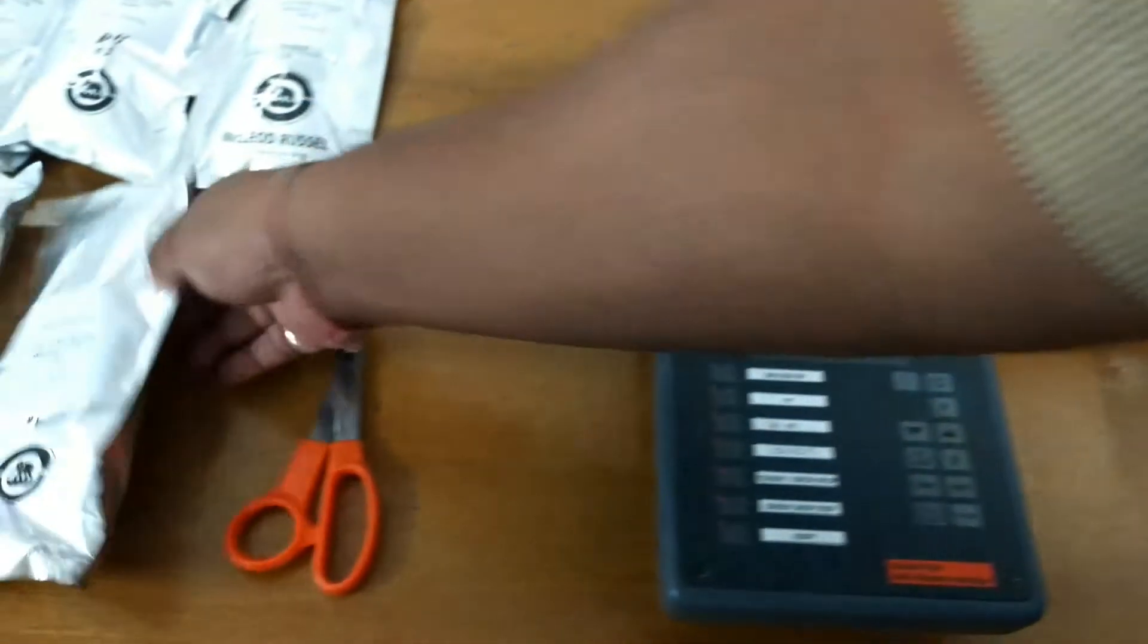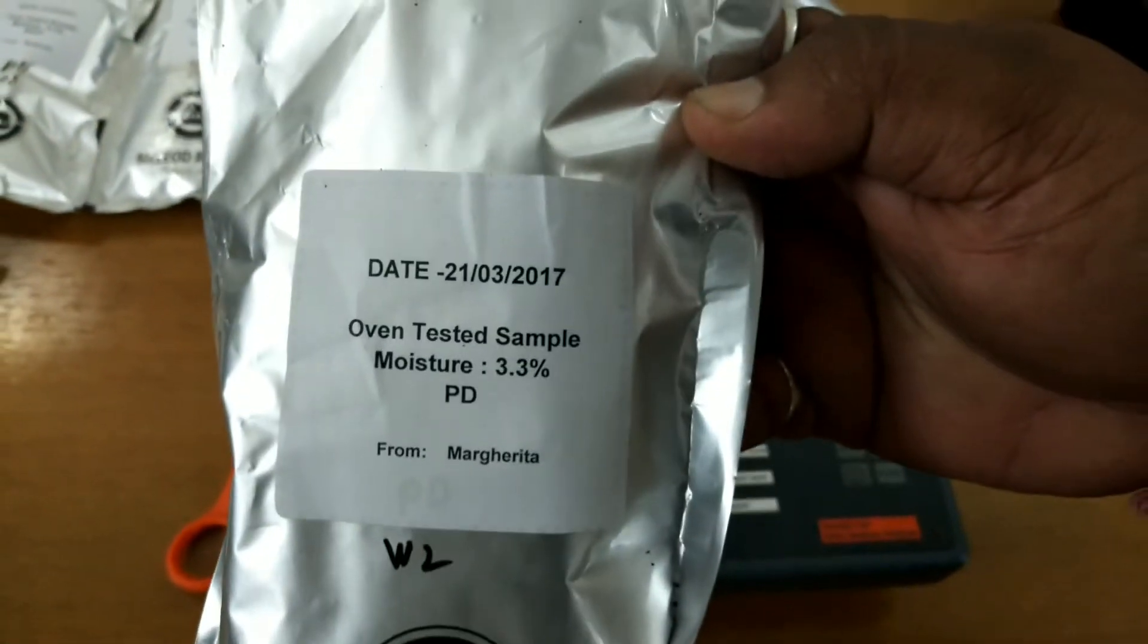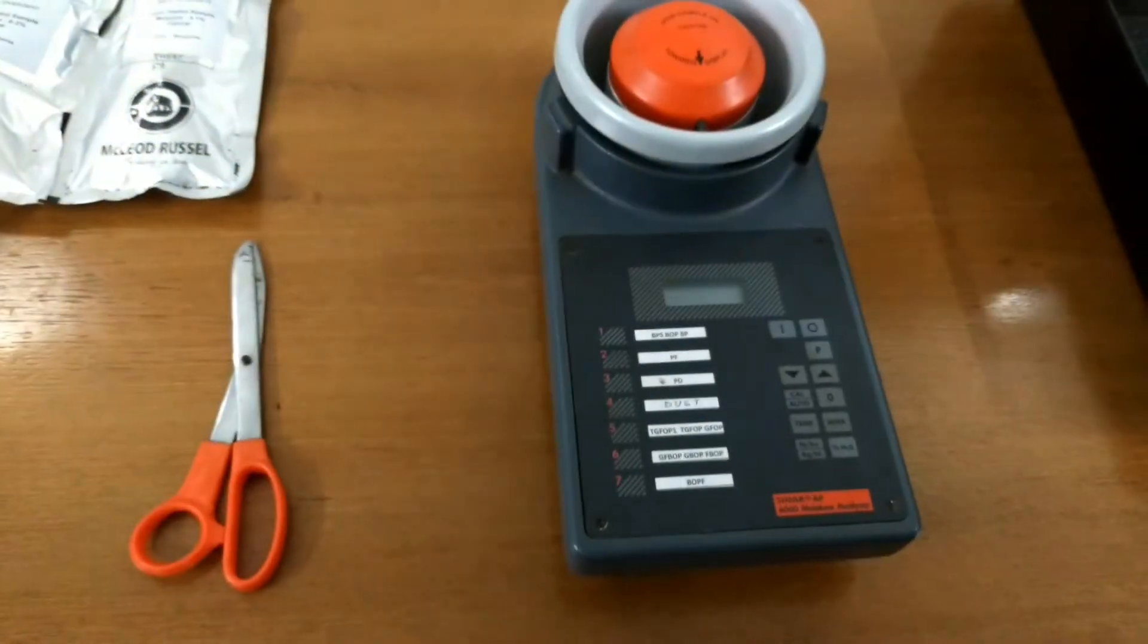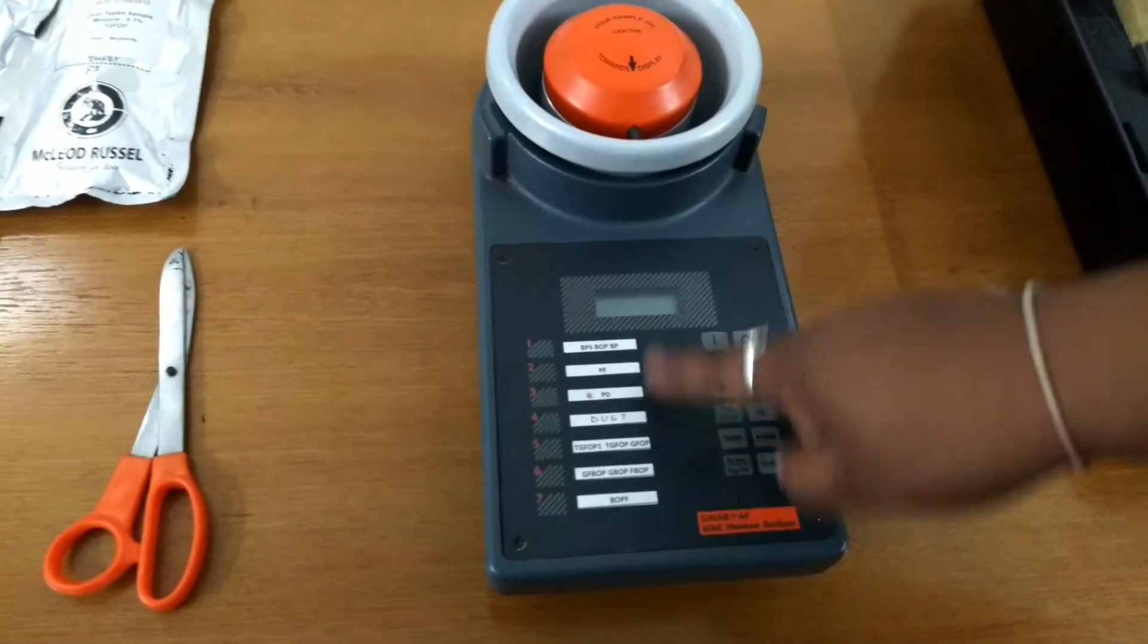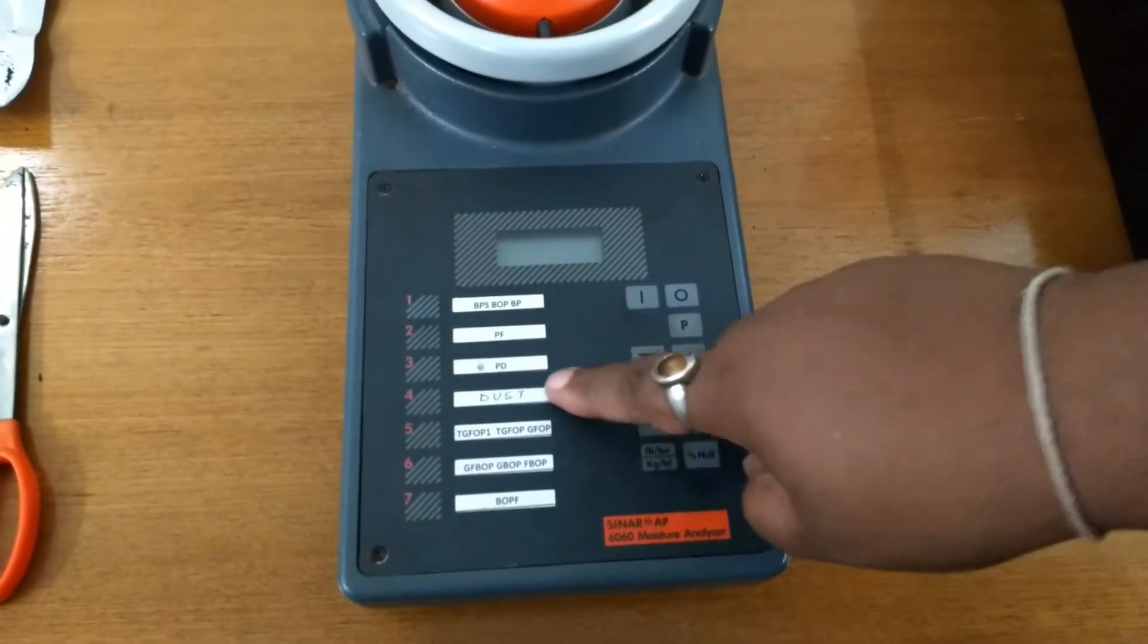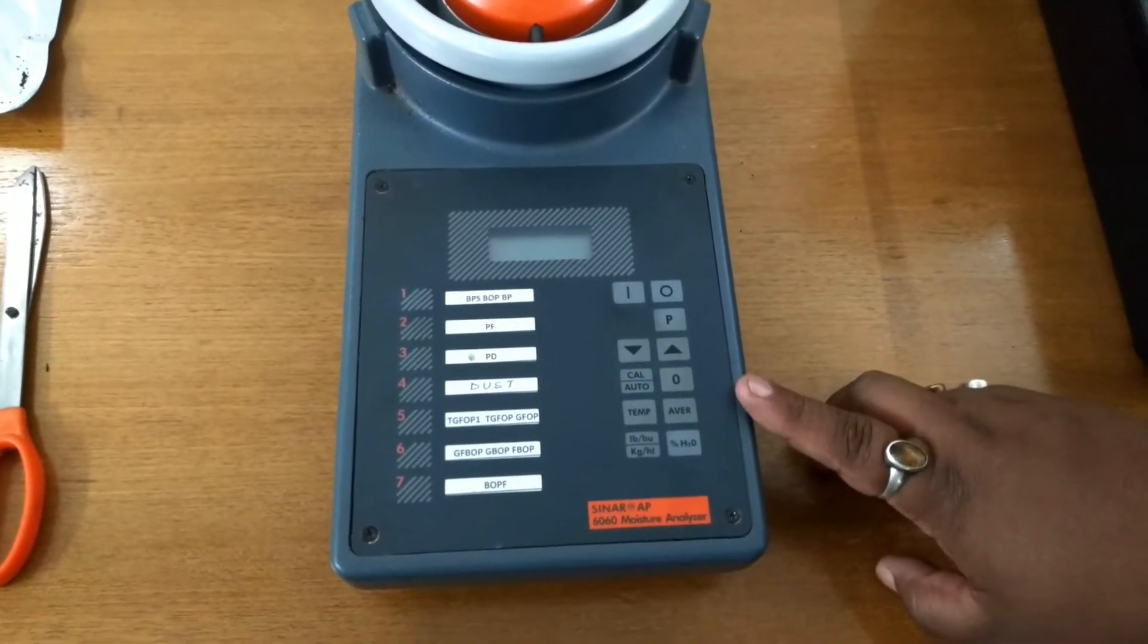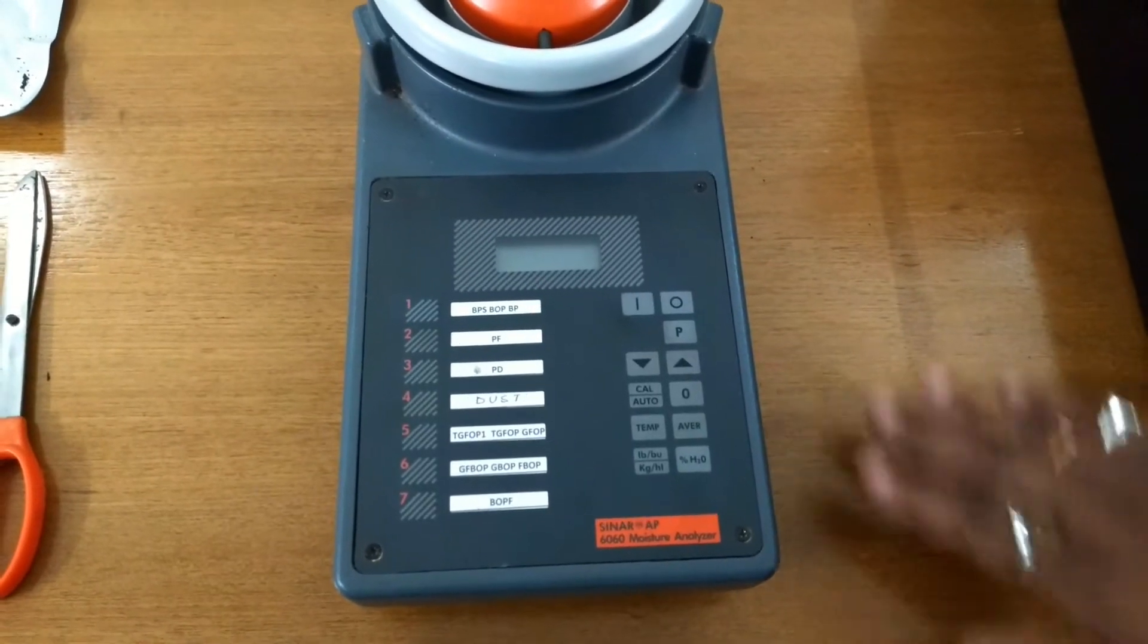Here we have sample PD which is showing 3.3% moisture. We will check PD in channel number 3 and see whether the machine is showing 3.3 or not. If the reading is plus or minus 0.02, then we accept the reading, otherwise we adjust it.